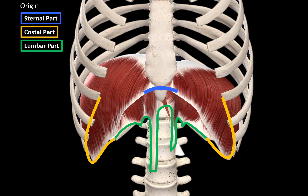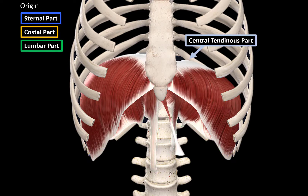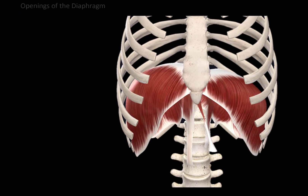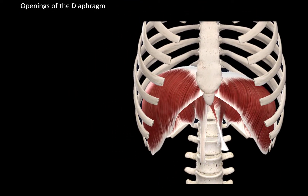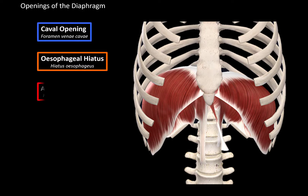Fibers originate from these areas and then insert at the central tendinous part to pull it down and help bring air into the lungs. Now let's talk about the openings of the diaphragm. The three main openings are the caval opening (or foramen vena cava), the esophageal hiatus, and the aortic hiatus. Other openings include the sternocostal triangle, the lumbocostal triangle, and small openings on the lumbar part as well.